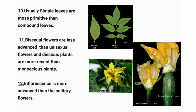Unisexual flowers are those that are either staminate or carpellate. The male and female flowers of cucumber are a good example. Dioecious plants are those which have male and female flowers on separate plants — for example, the date palm. Monoecious plants have both male and female flowers on a single plant — for example, the maize plant.